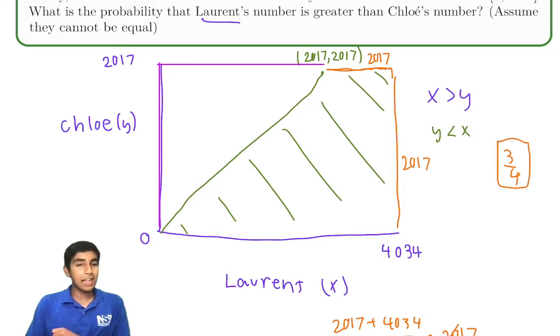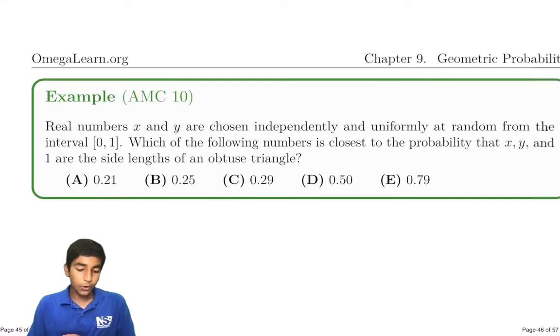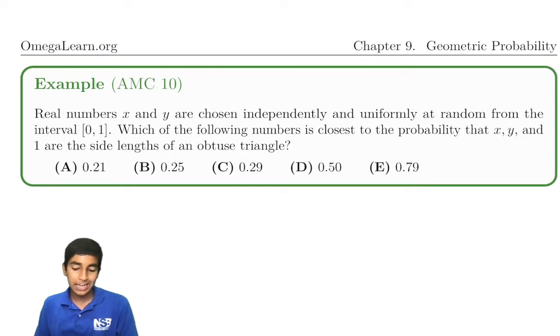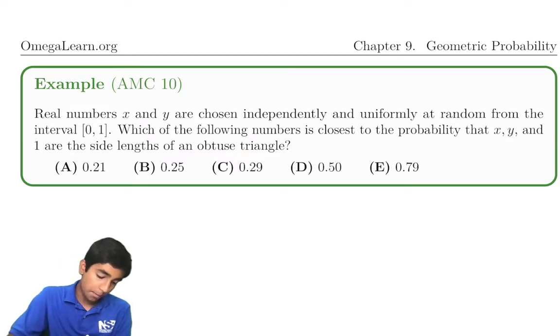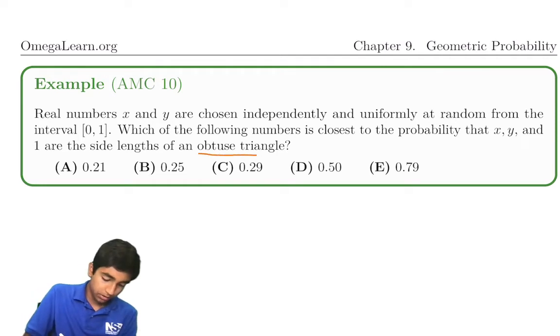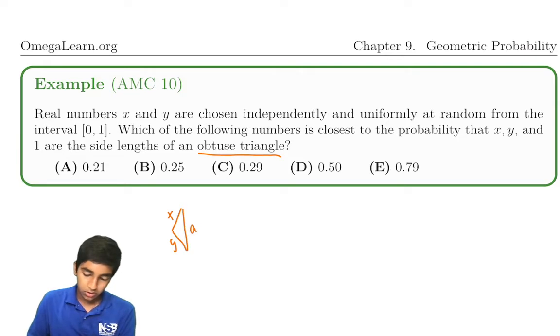And that is a classic example of geometric probability. But it can get a lot more complicated. Real numbers x and y are chosen independently and uniformly at random from the interval 0 to 1. Which of the numbers is closest to the probability x, y, and 1 are the side lengths of an obtuse triangle? First of all, what do we know about an obtuse triangle? Well, we know it's x, y, and 1.